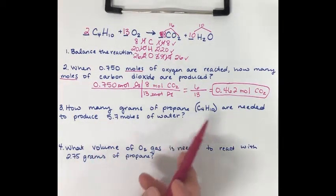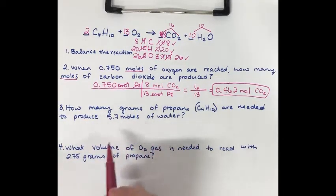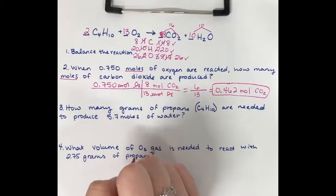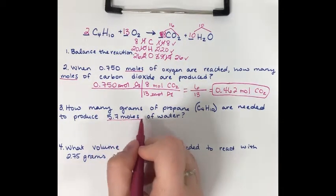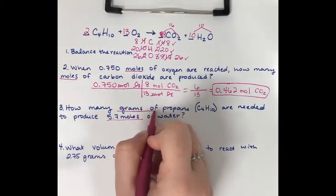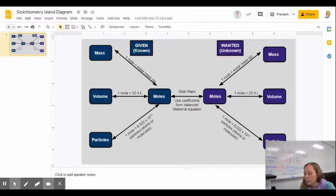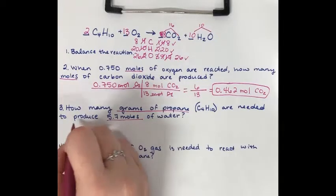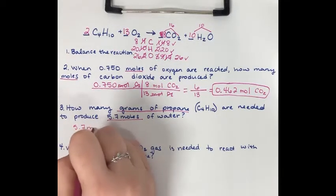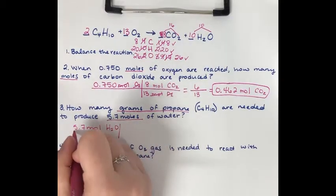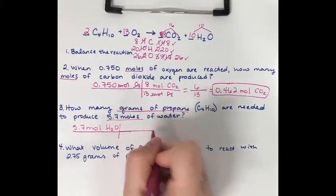For the third part: how many grams of propane are needed to produce 5.7 moles of water? Looking at my stoichiometry island diagram, I'm going from moles of the given to the grams of the unknown. My given is 5.7 moles of water. The first step is going from moles of water to moles of propane — or butane — using the mole-to-mole ratio with coefficients from the balanced chemical equation. I put my given, 5.7 moles of water, here.